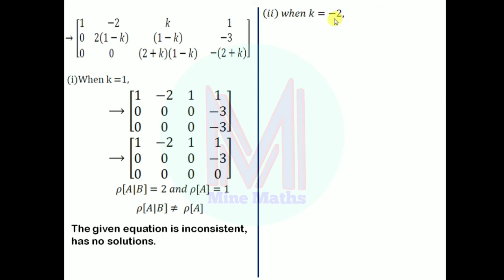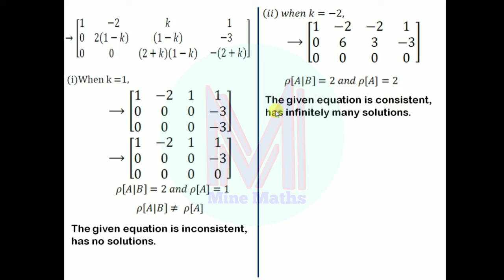Case (ii): When k = -2, substituting this value gives rank(A) = 2 and rank(A|B) = 2. Since row 3 becomes complete zeros and the number of non-zero rows equals 2, both ranks equal 2. The rank equals 2 but the number of unknowns is 3, so the system has infinitely many solutions when k = -2.